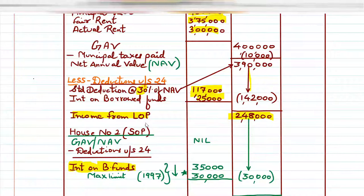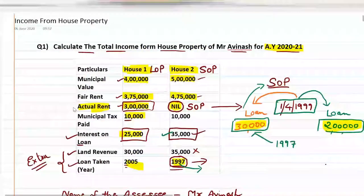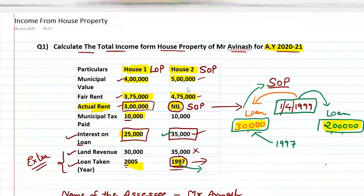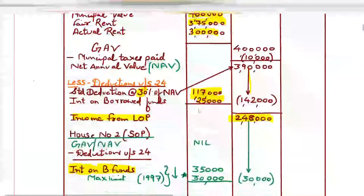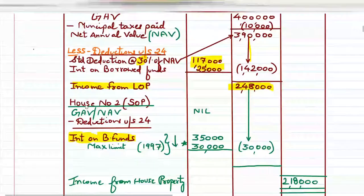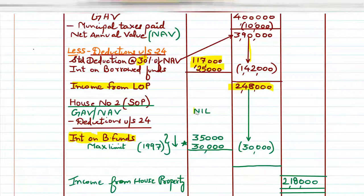That is the income from LOP house number one — ₹2,48,000. Three steps were calculated: step one is GAV, step two is NAV, step three is income from house property. Now for house number two, it is self-occupied — SOP, self-occupied property. We know it is SOP because actual rent is nil. SOP's format is simple: GAV and NAV are always nil.